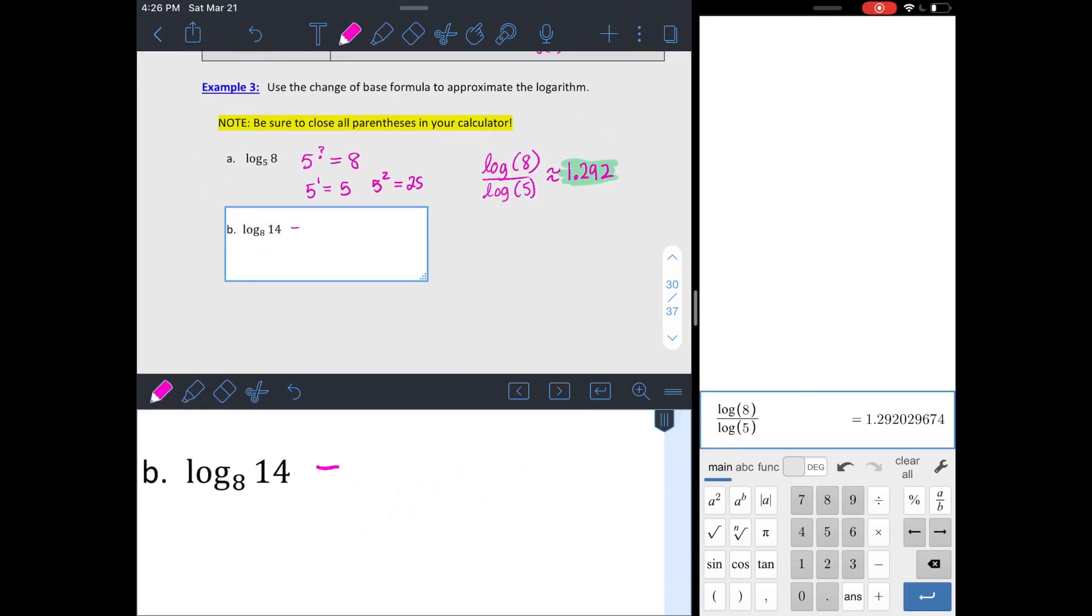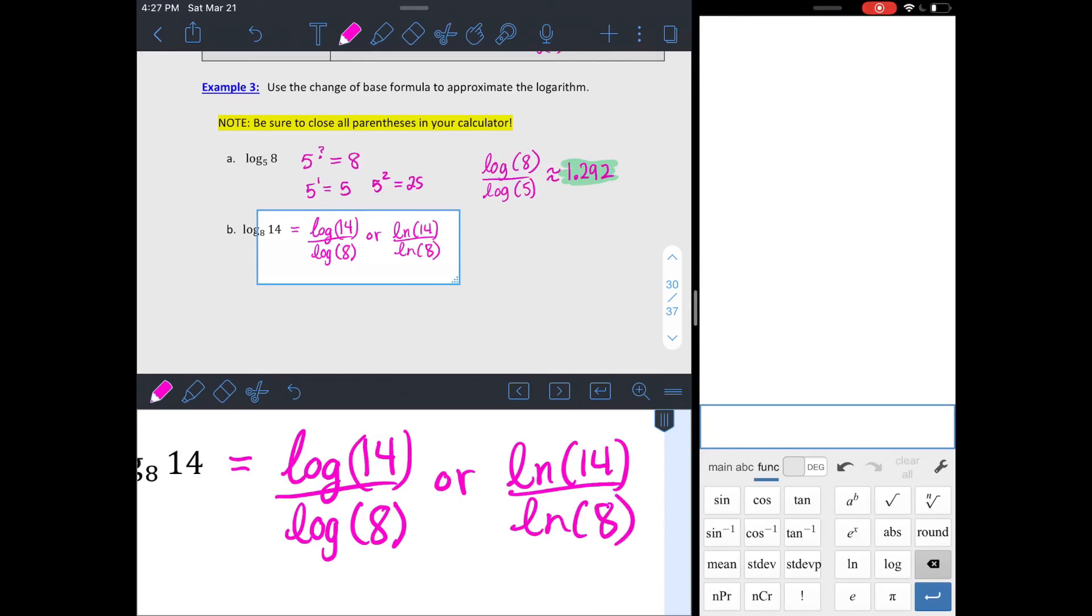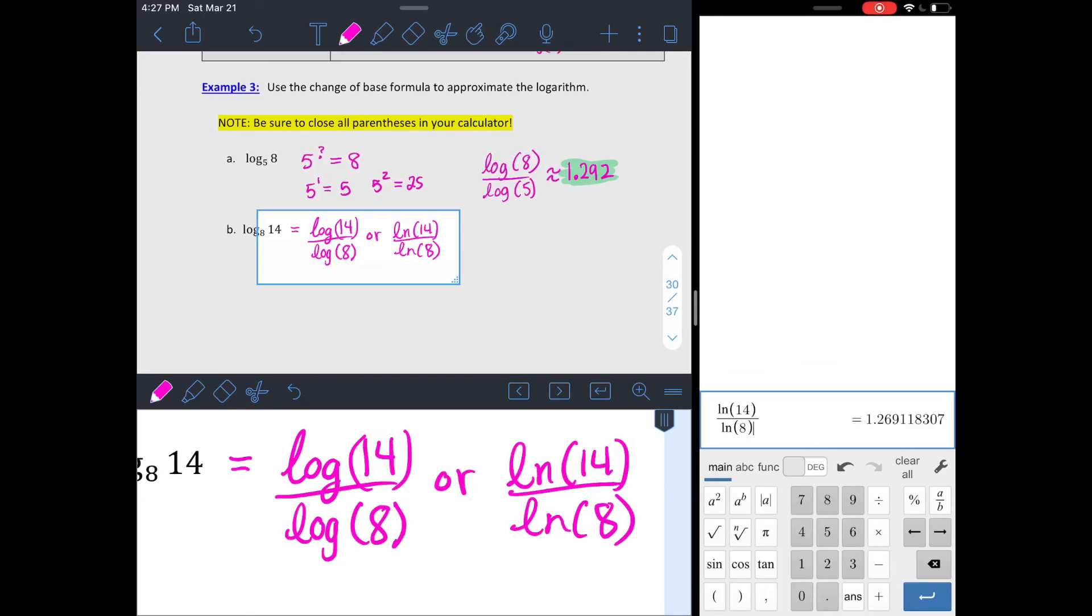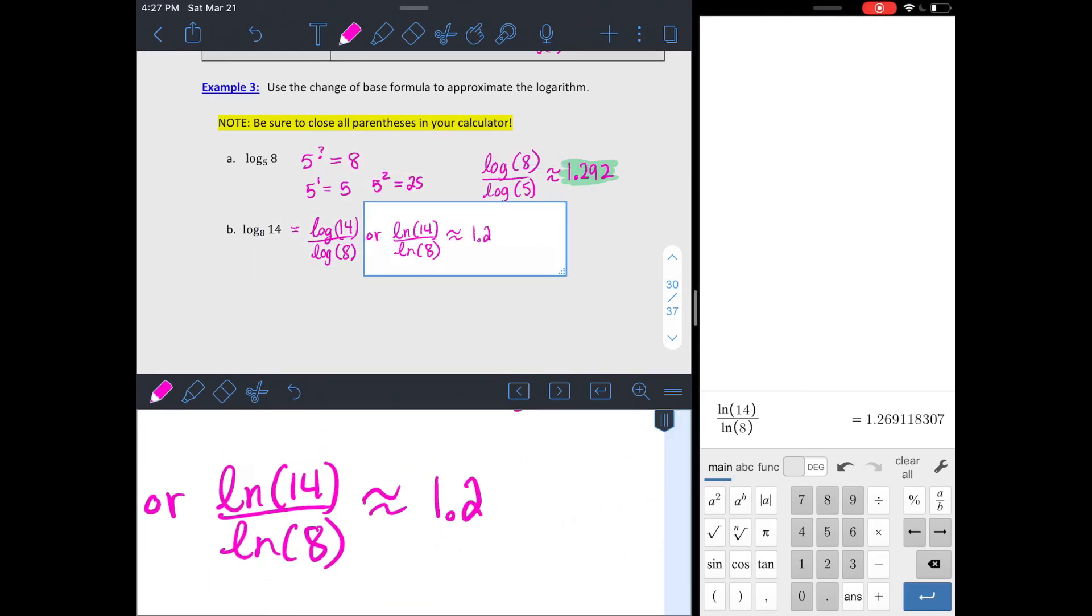You could do this one the same way. Again, 8 to the 1st, 8 to the 2nd, this is somewhere between 1 and 2. So, do log of 14 divided by log of 8, or for fun, if you want to mix it up, you could do natural log of 14 divided by natural log of 8, which, I'll do that just for the heck of it. It's the same thing. Either way, you're going to get approximately 1.269. I don't know why I made it 1.27. 1.269 would be the best choice.